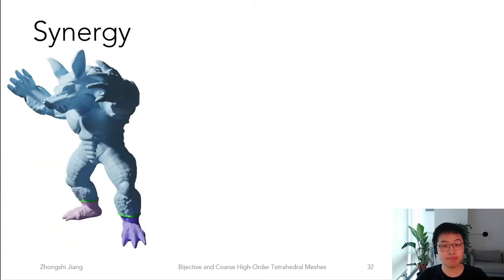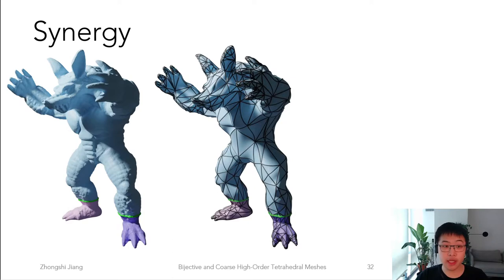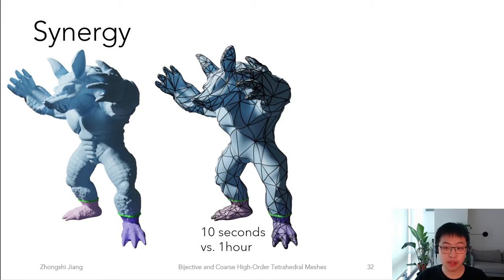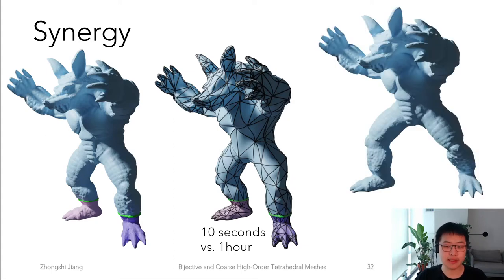To put this back into context, we can envision a simulation pipeline as the following. Start with this armadillo triangle mesh. We specify a few regions for boundary conditions. A coarse, high-order tetrahedral mesh can be created which exactly preserves these regions. It is then used to undergo a fast simulation, which only takes 10 seconds. If you perform a similar simulation on a dense, linear tetrahedral mesh, it will take up to an hour. And then the solution as a displacement field is transferred back to the original surface mesh.